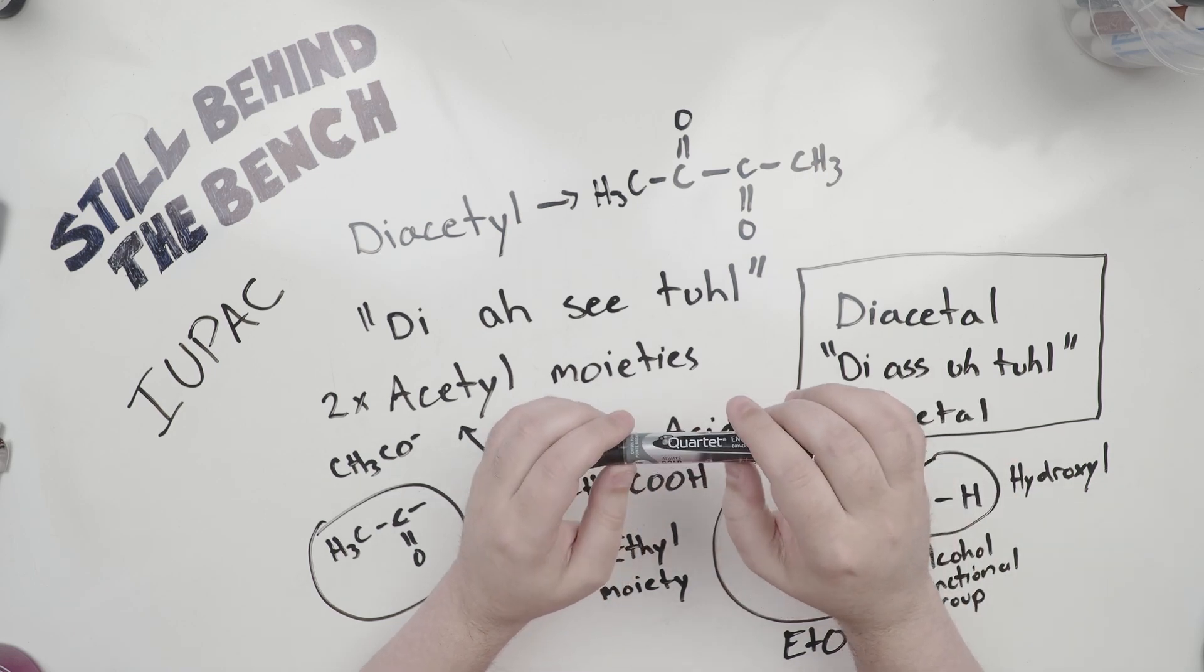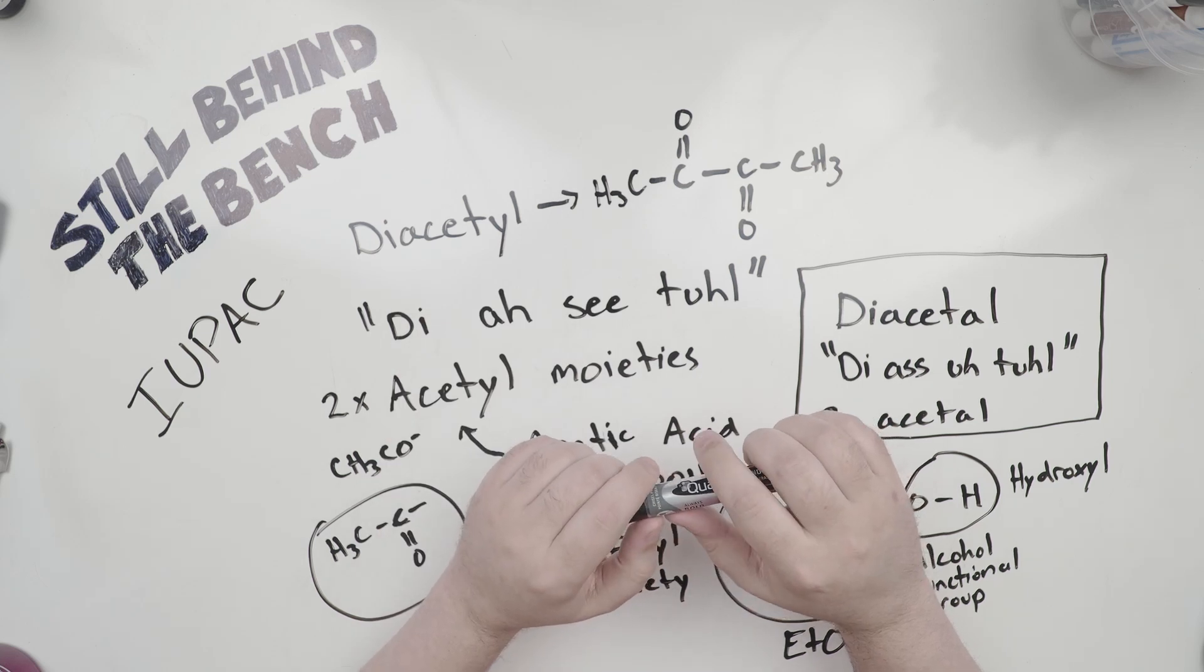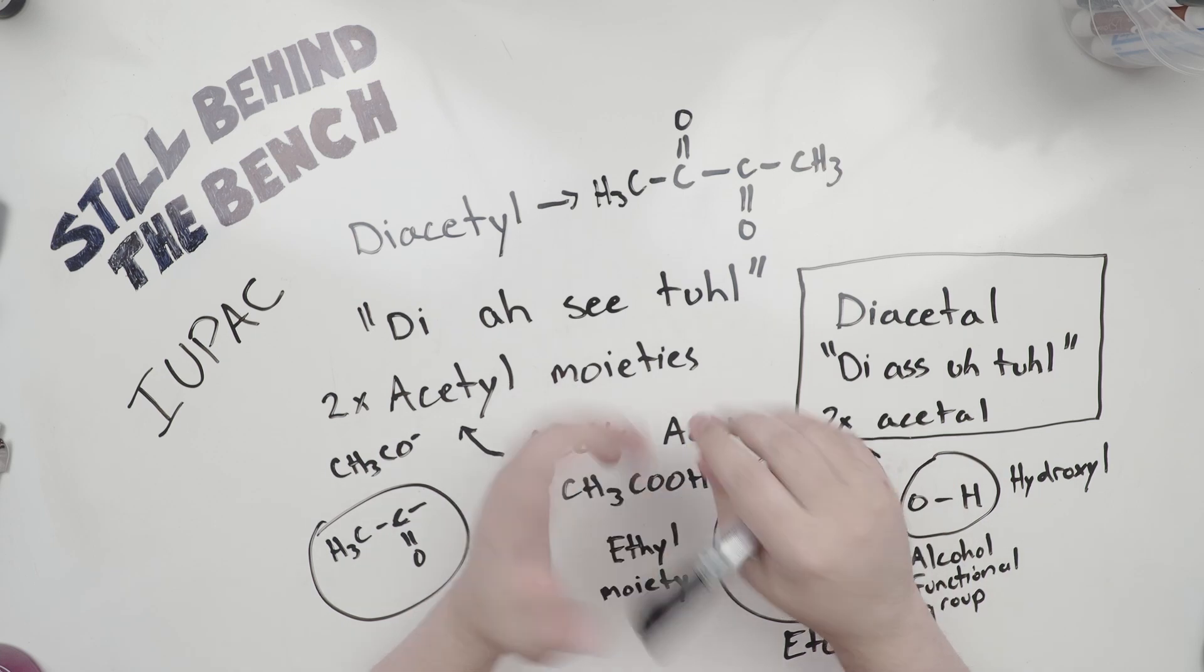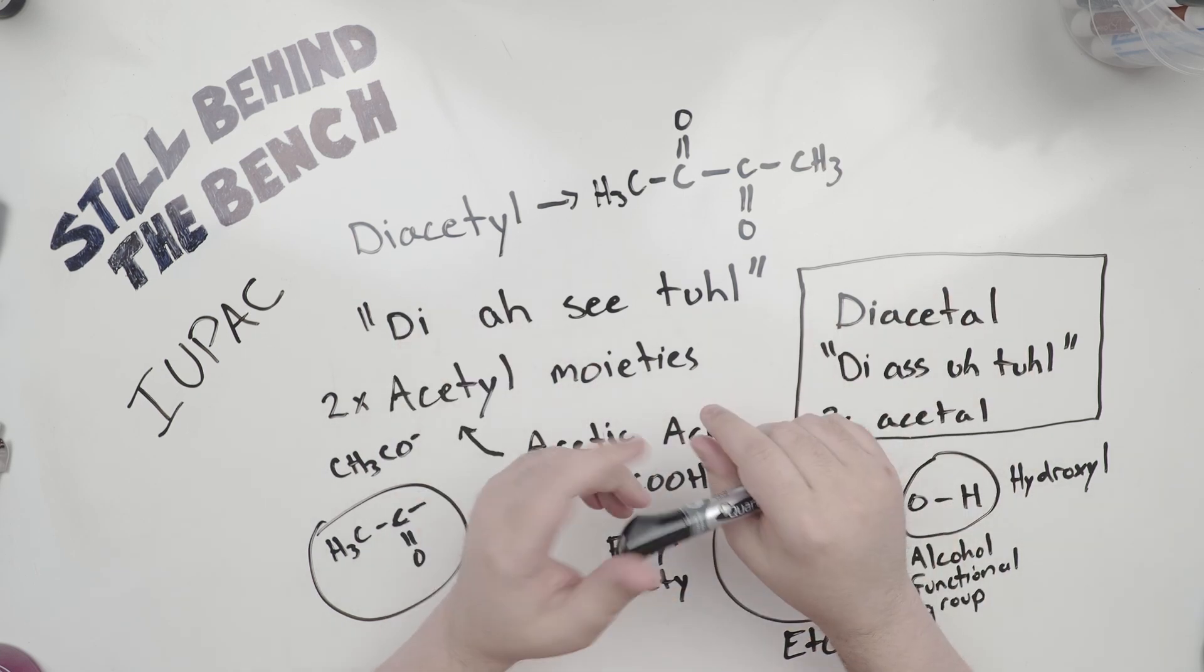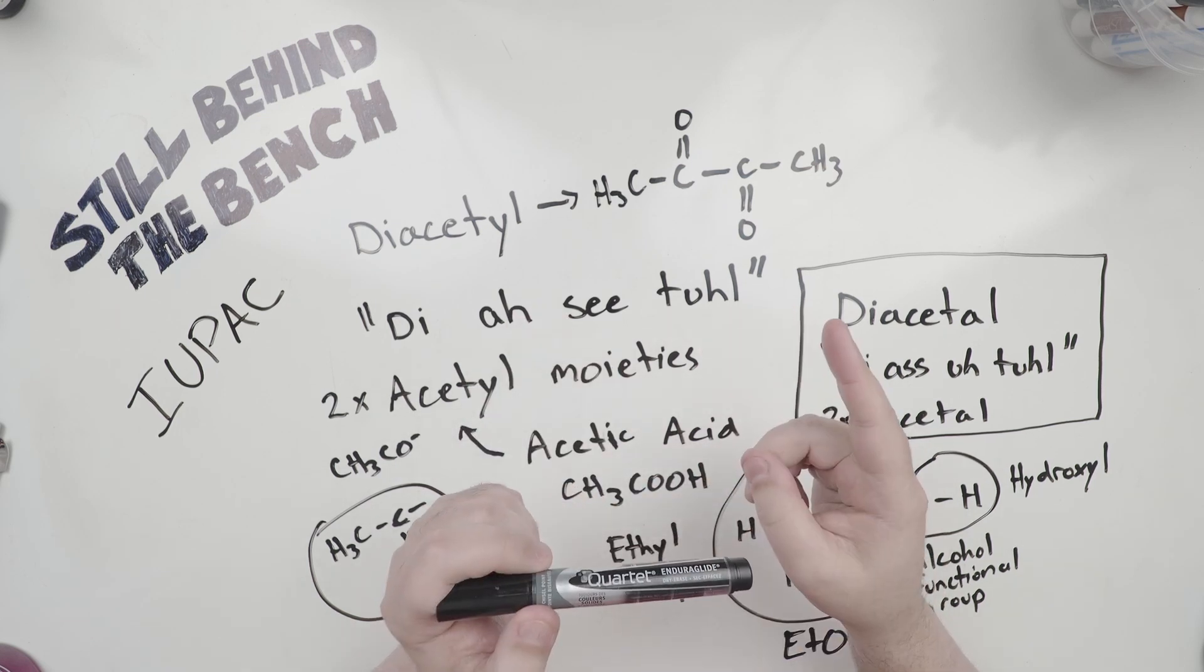Hopefully it'll whet your appetite to learn more and teach you enough so that you're more self-sufficient. So for this video I'm going to talk about acetoin, acetyl, and 2,3-butanediol. But it's mainly about diacetyl, about what it is and what conditions are needed to increase or decrease the amounts. So let's get started.